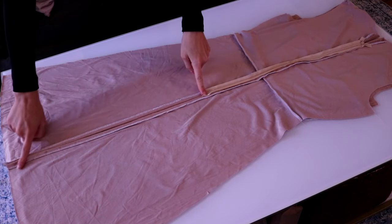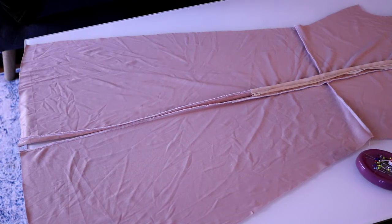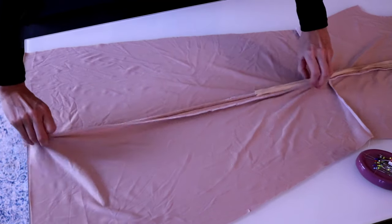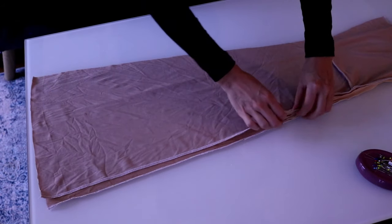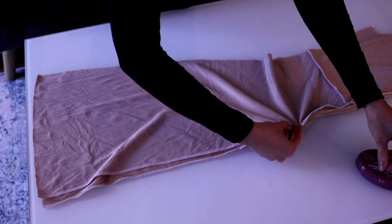Now it's time to finish the seams below and above the zipper. Start by pinning the seam below. Make sure that the end of the zipper tape stays out of the way when pinning and sewing.